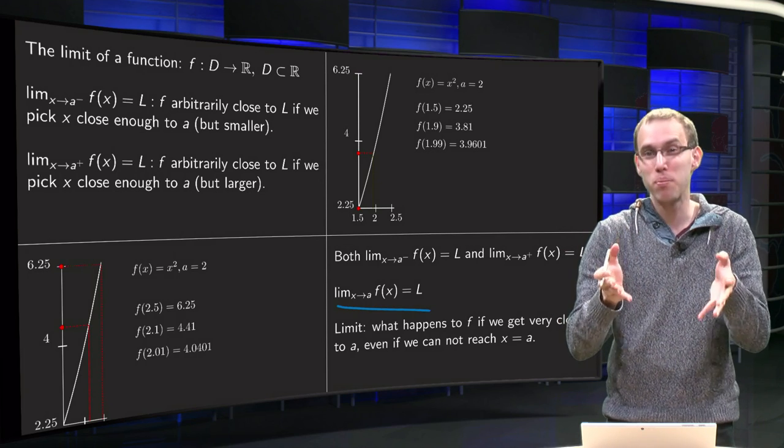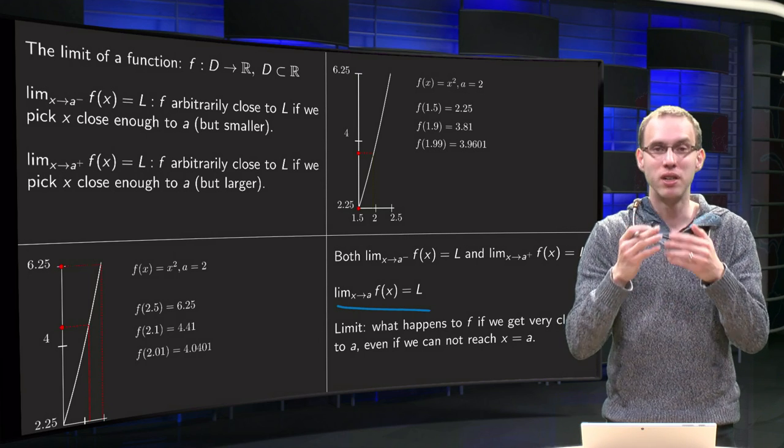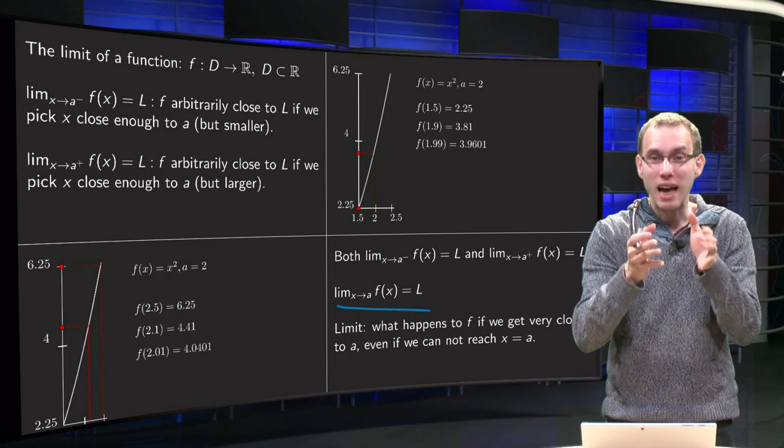We use information from x that is very close to that, and using only that information from points close to x equals a, we get information about what happens at x equals a, and that is what we call the limit.